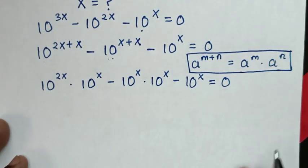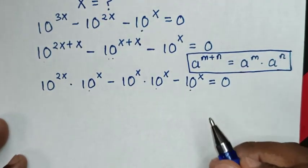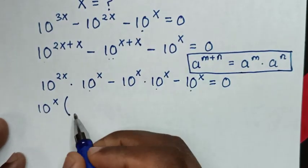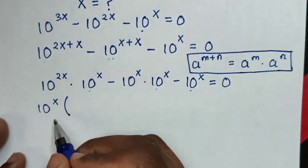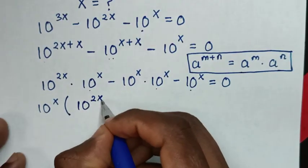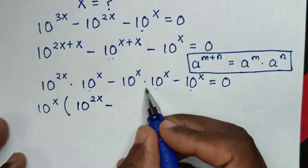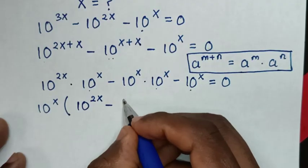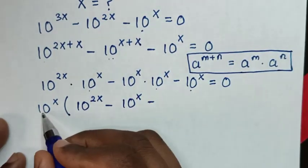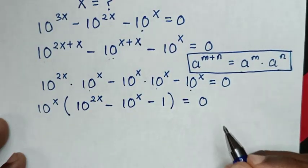Then in the next step we take 10 to the power of x out as a common factor, giving us 10 to the power of x times (10 to the power of 2x minus 10 to the power of x minus 1) equals 0.